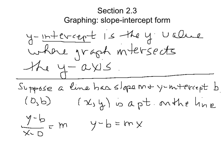And then we can write the equation like this: y equals mx plus b. And so that is the equation of the line if we're given the slope and the y-intercept.